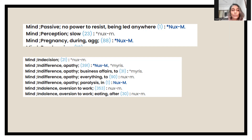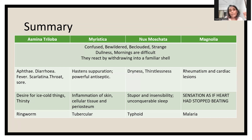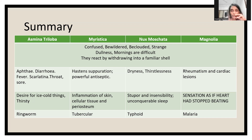In the repertory you see Nux Moschata under passive — no power to resist, being led anywhere. Very naive, very ill-prepared, very dependent. Indecision, indolence, indifference — you will see Nux Moschata there. For differentiation: Asimina is known mostly for aphthae and is the ringworm miasm; Myristica is tubercular miasm; Nux Moschata is typhoid miasm; and Magnolia has the malaria miasm. These are some other remedies you can differentiate from a miasm or keynote characteristic perspective.